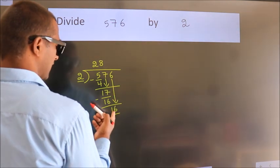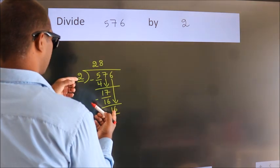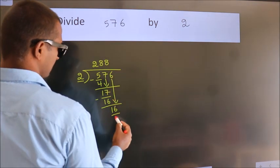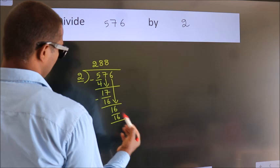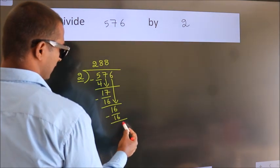When do we get 16? In 2 table. 2 8s, 16. Now, we subtract. We get 0.